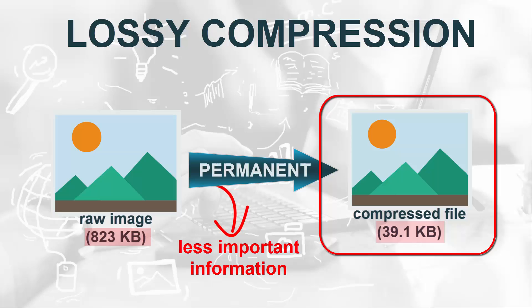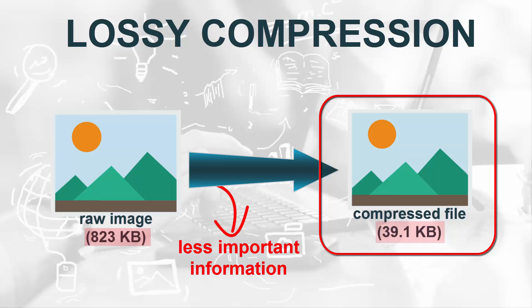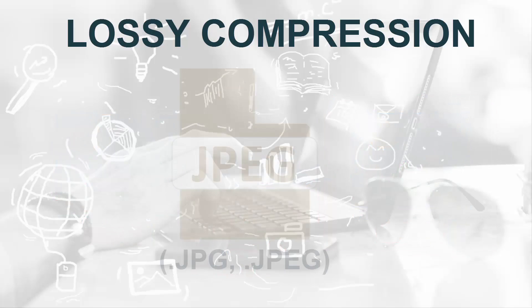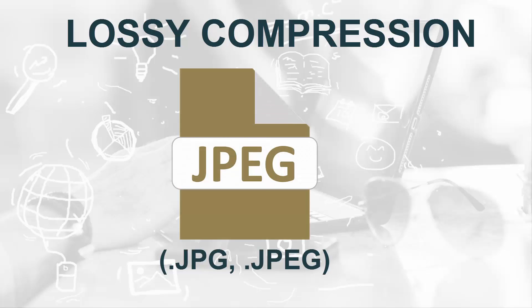However, this process is permanent, so once the compression has been applied, the original file can no longer be viewed. An example of an image file format using lossy compression is JPEG, usually using the file extension JPG or JPEG.